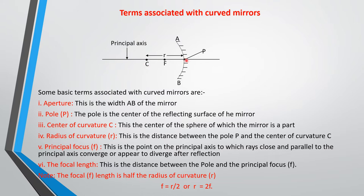The point at the center of the reflecting surface of the mirror is called the pole, P. The center of curvature of the mirror is the center of the sphere of which the mirror is a part — the mirror is like a sphere that has been cut. The radius of curvature is the distance between the pole and the center of curvature.